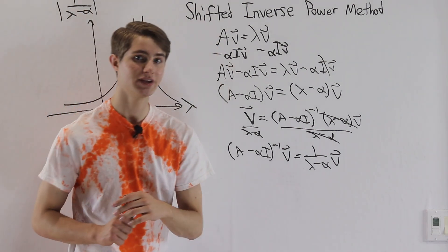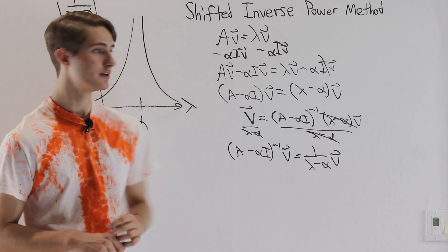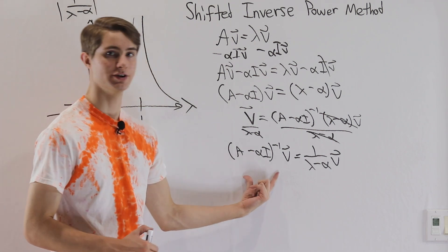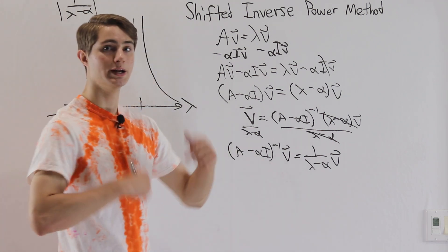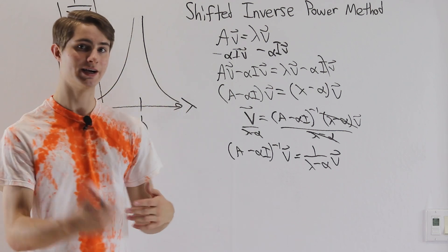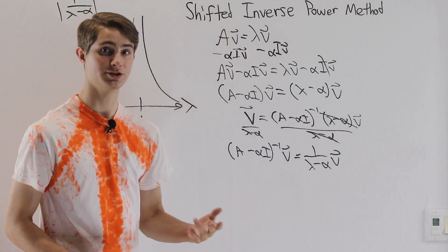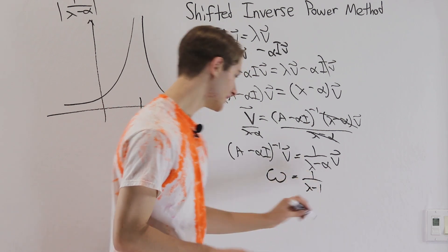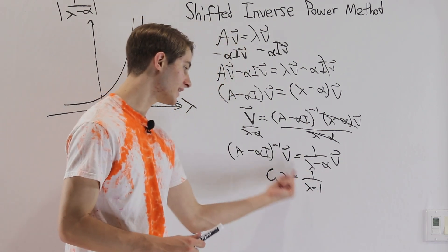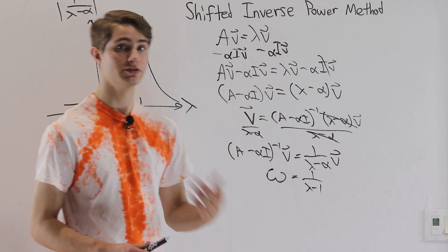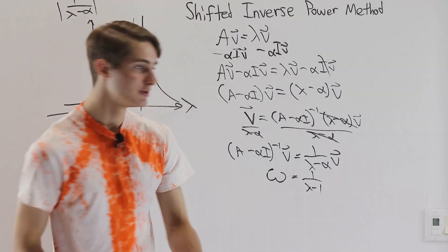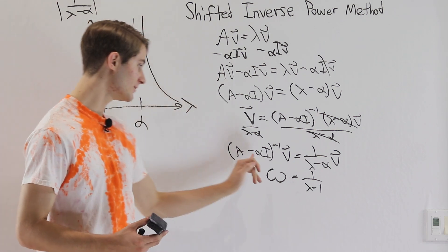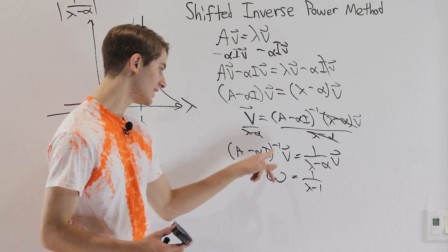Let's go through an example. Say we have some matrix A and want to find the eigenvalue closest to 1. We let alpha equal 1 and compute (A minus alpha I) inverse. Then we apply the power method to this matrix until we get some eigenvalue omega and eigenvector. That eigenvector is also an eigenvector of the original matrix A. Then using omega equals 1 over (lambda minus alpha), since we know alpha and omega, we can easily solve for lambda.